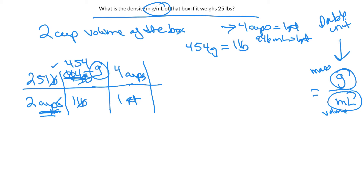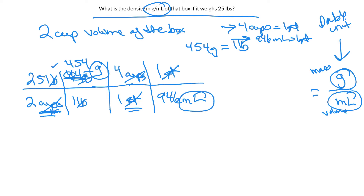I'll use this one first: four cups equals one quart. Remember, in a conversion factor what's on the top and bottom have to be equal to each other. My cups cancel and I'm at quarts. Now I use the next one: one quart equals 946 milliliters. I set up the problem to get rid of quarts and arrive at milliliters. There are my milliliters, and I am done with the problem.